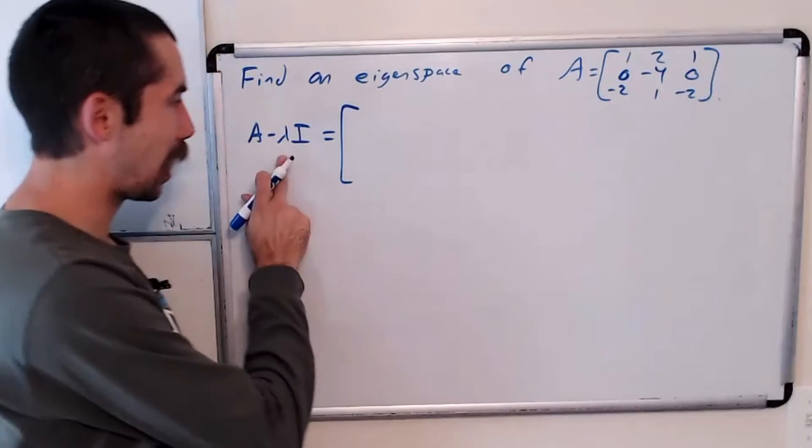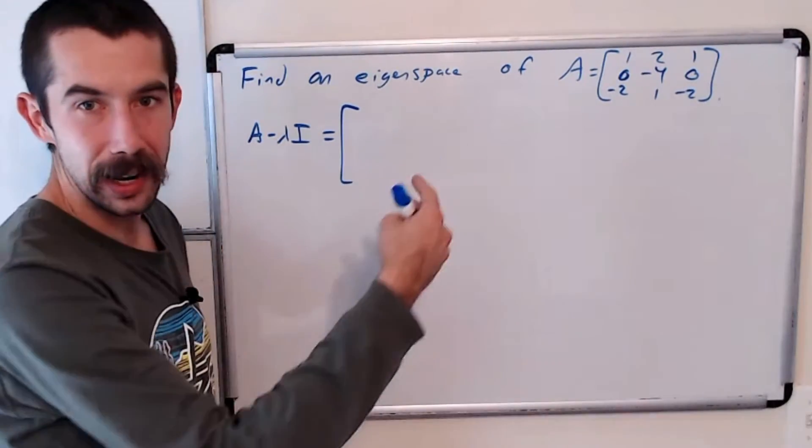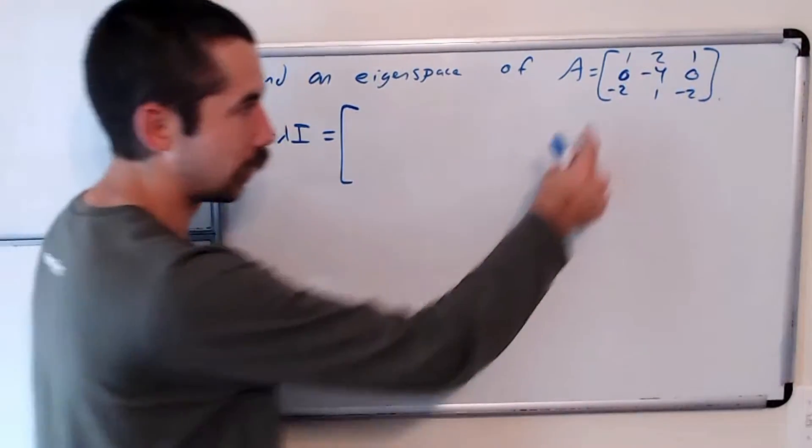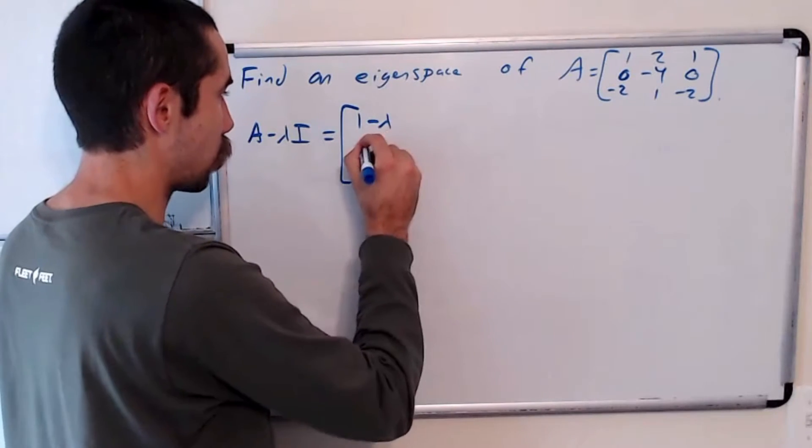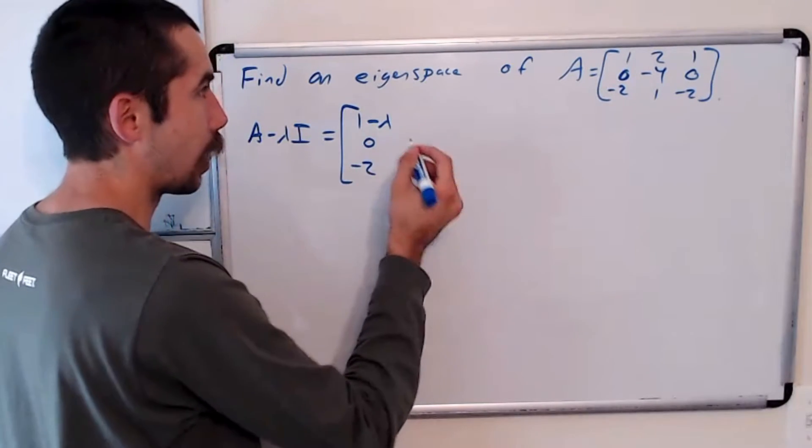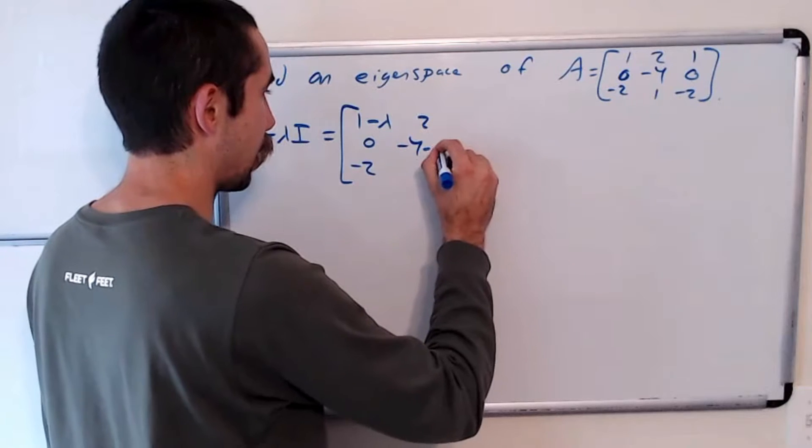To get A minus lambda I, we take A and subtract lambda from each of the entries on the main diagonal. So you'd get this matrix, and we want to find its determinant.